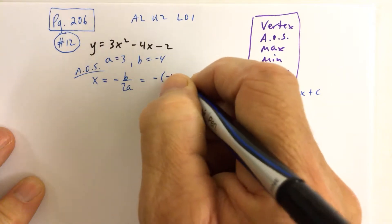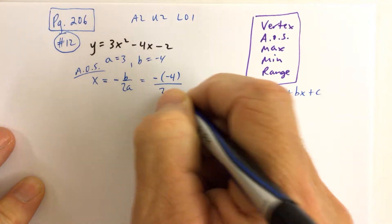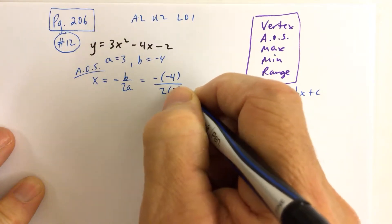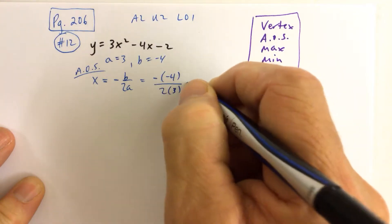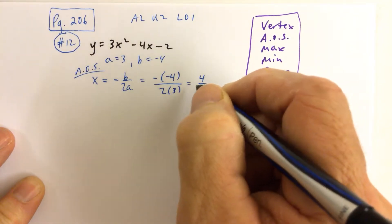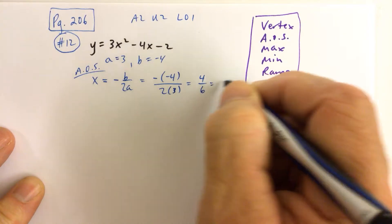In this case, b is negative 4 and a is 3. So we get negative negative 4. The opposite of negative 4 is positive 4, and 2 times 3 is 6.